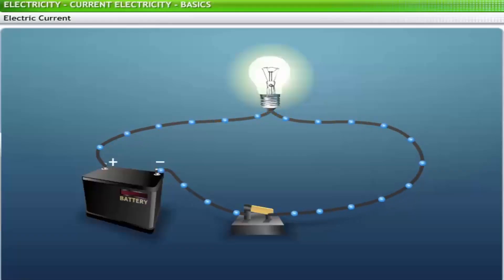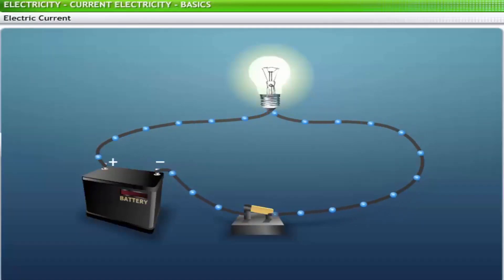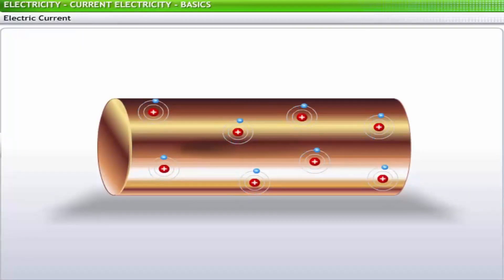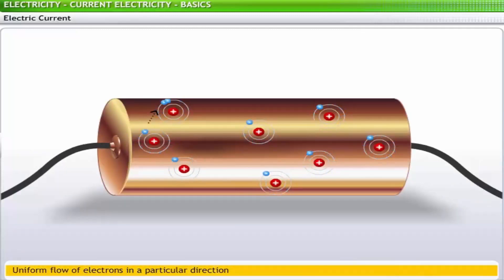Before learning about the cause and applications of electric current, let us examine the features of electric current. Typically, in a conductor, free electrons move randomly. When these electrons are influenced to move uniformly in a specific direction, we get electricity, or electric current.